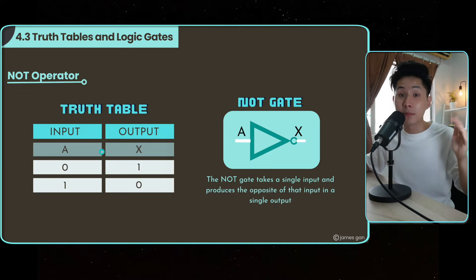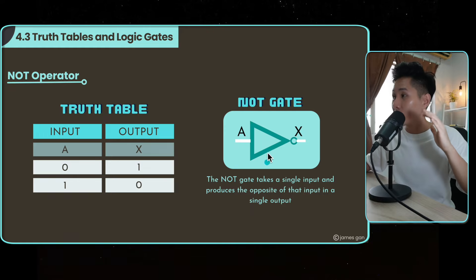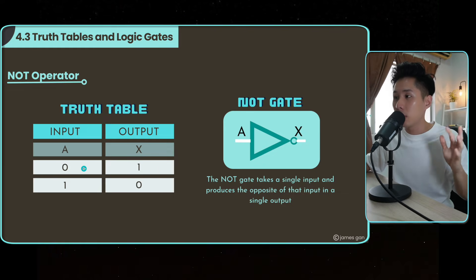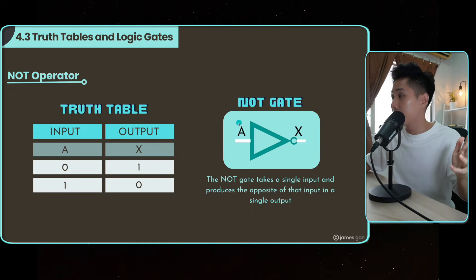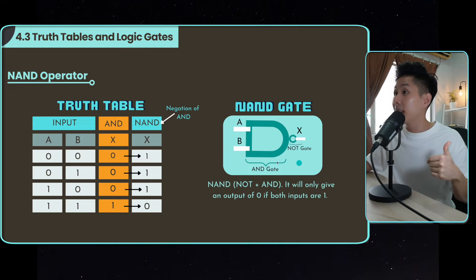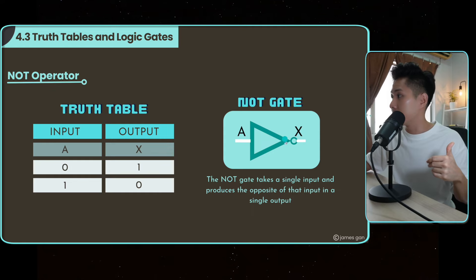The NOT operator is very simple — it takes just one input and negates it: false becomes true, true becomes false. The symbol for a NOT gate is a triangle with a circle. The circle is very important.